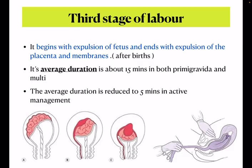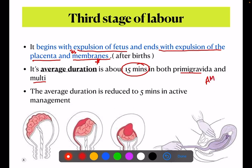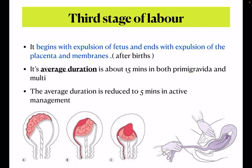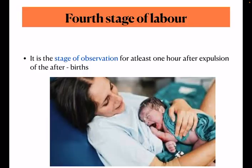Third stage of labor: it begins with expulsion of the fetus and ends with expulsion of the placenta and its membranes. This is very important — in your theory exam, you must write 'placenta and its membranes,' not only placenta. The average duration is 15 minutes in both primigravida and multipara. But with active management of the third stage of labor, the duration is reduced to five minutes.